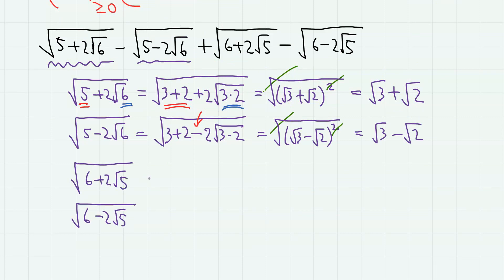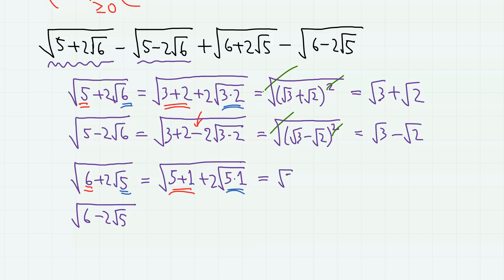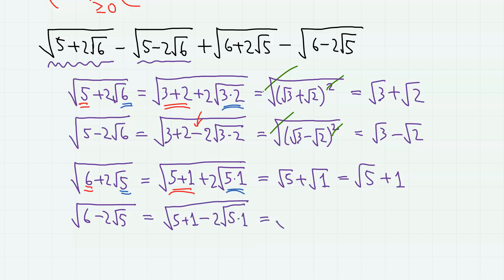Similarly, for the third term, 6 = 5 + 1 and 5 = 5 × 1, so we have square root of 5 + square root of 1, which is square root of 5 + 1. For the term with the minus sign, we have square root of 5 - square root of 1, therefore square root of 5 - 1.